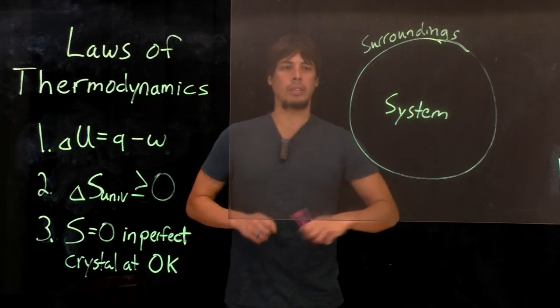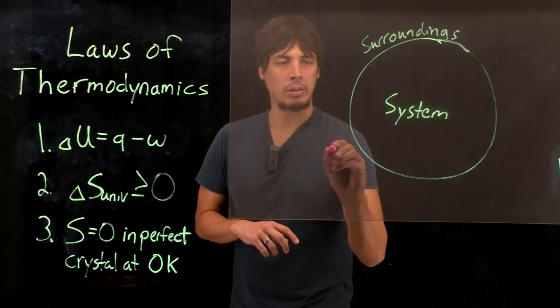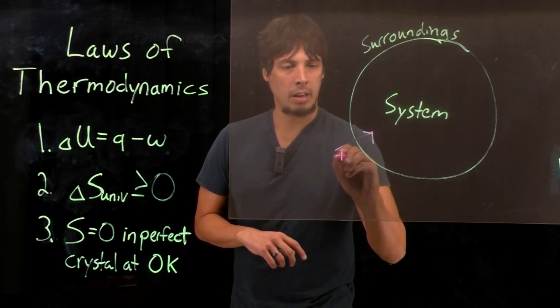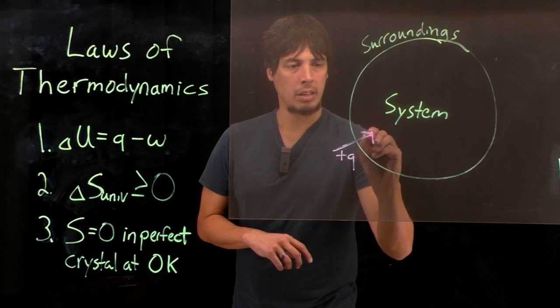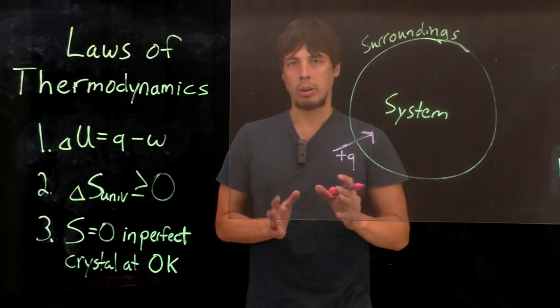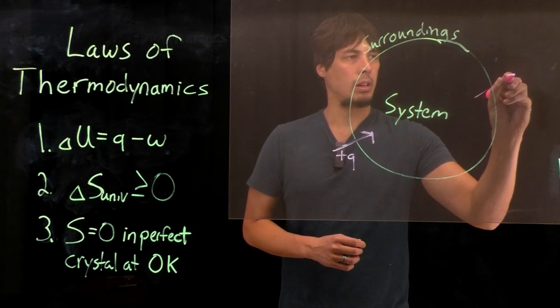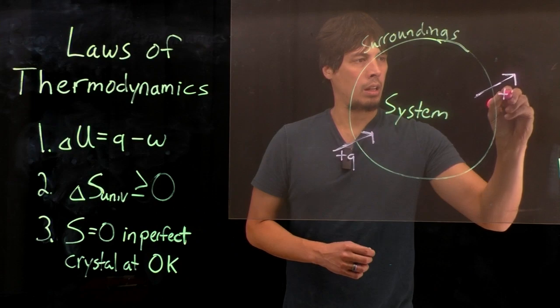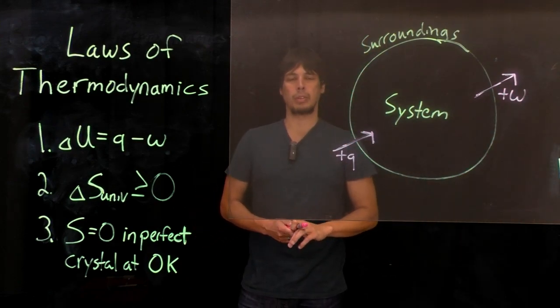And so the signs for these are as follows. If heat enters from the surroundings into the system, that is a positive Q. Whereas if work is being done by the system to the surroundings, like so, then the sign for that is also positive.